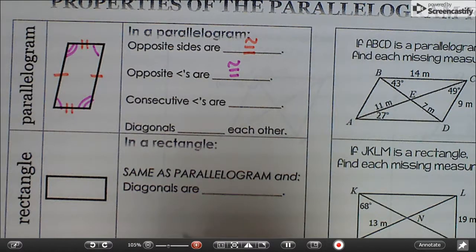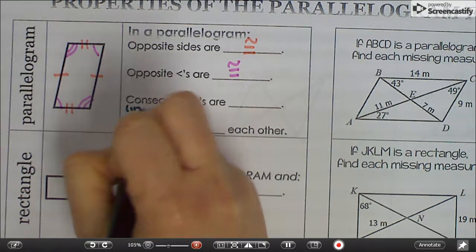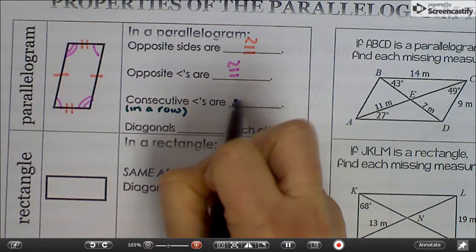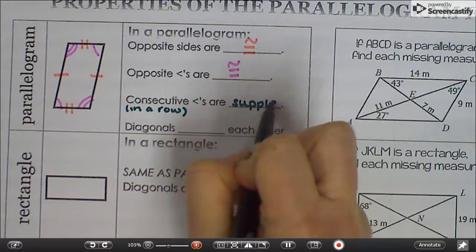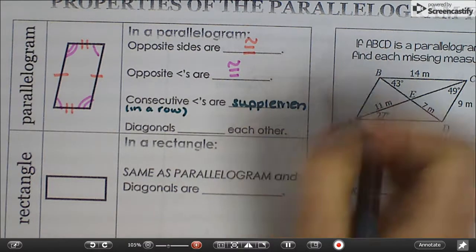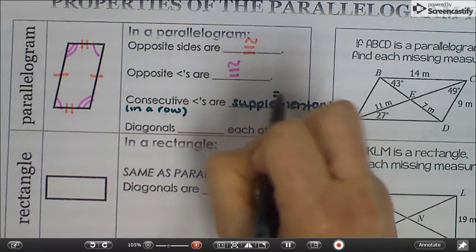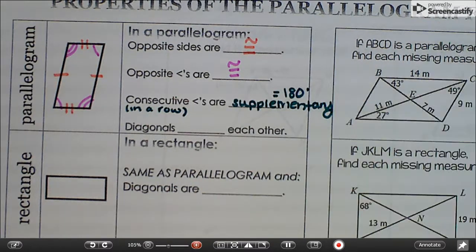Consecutive, which means in a row, angles are supplementary. And hopefully as soon as you hear the word supplementary, a little light turns on in your brain and says that they add up to 180.